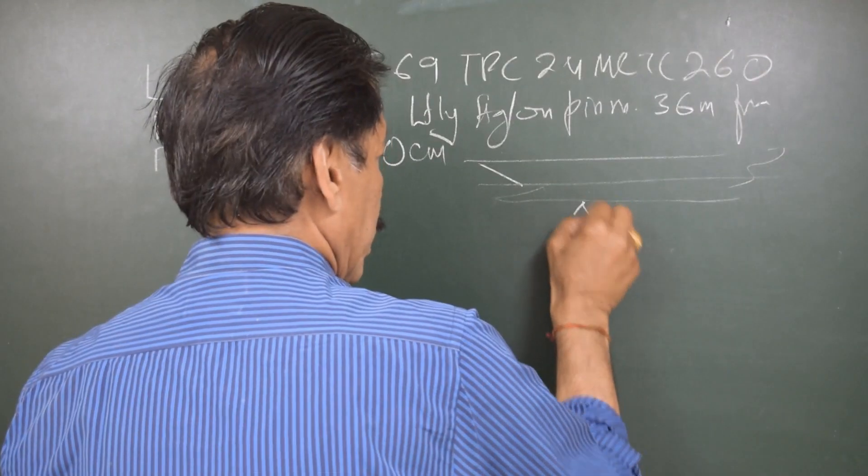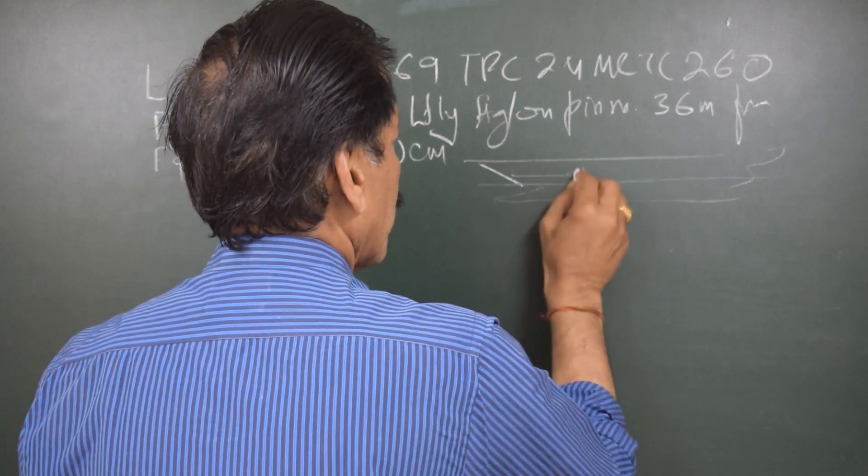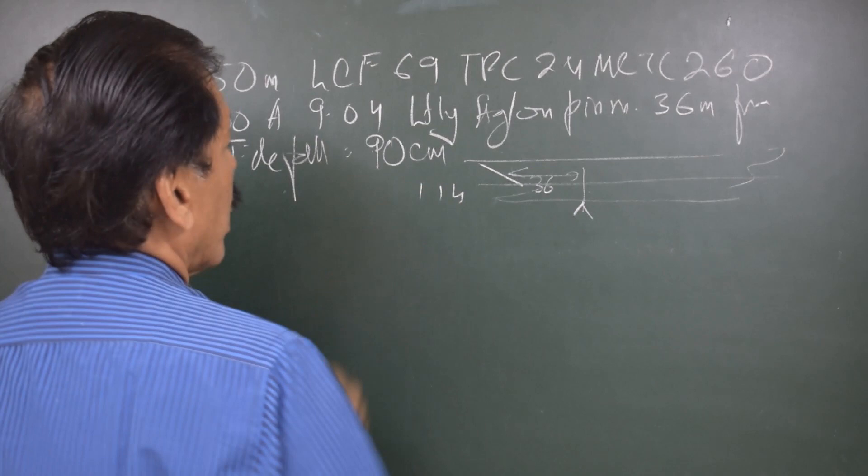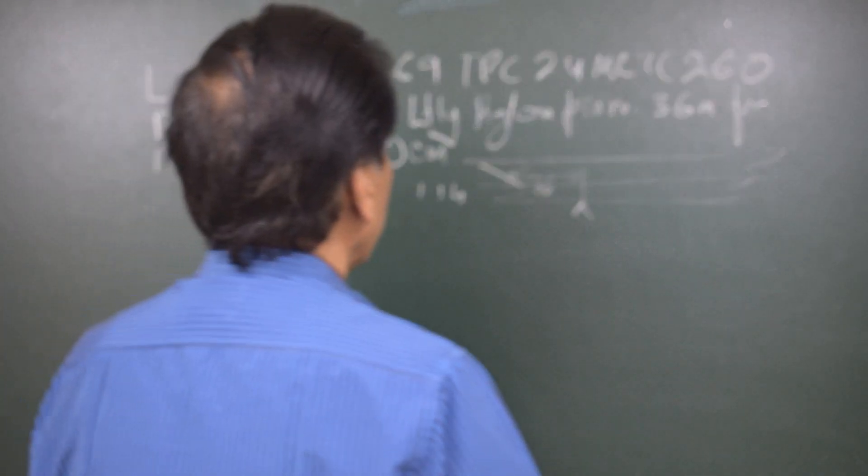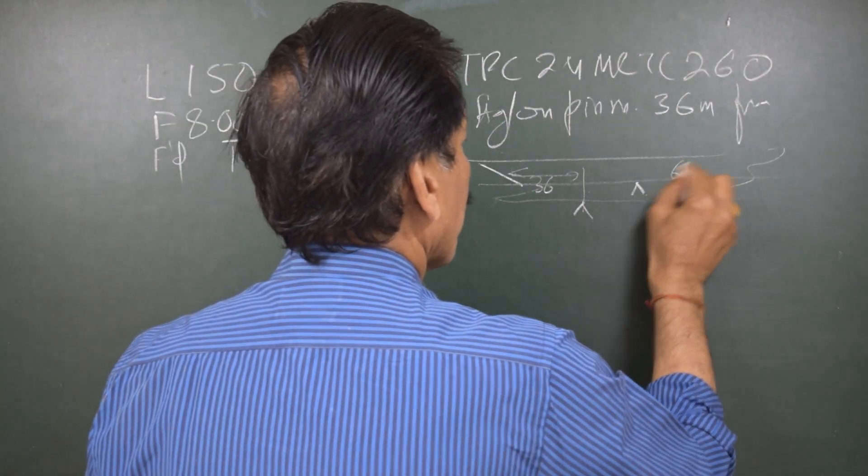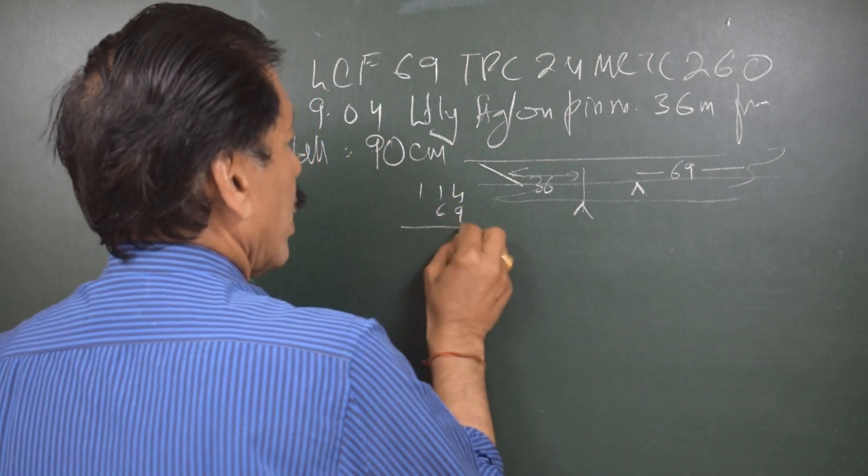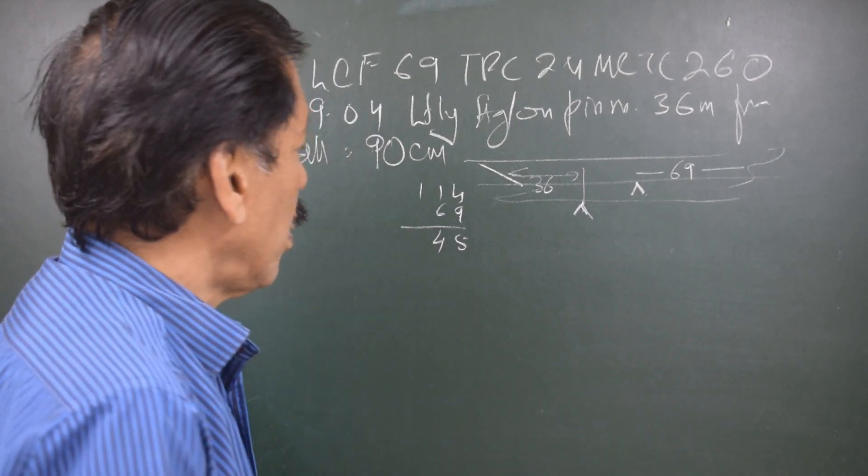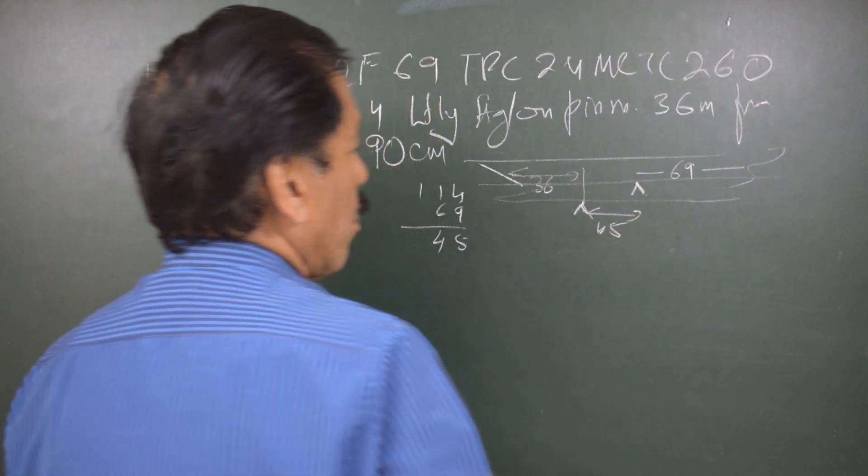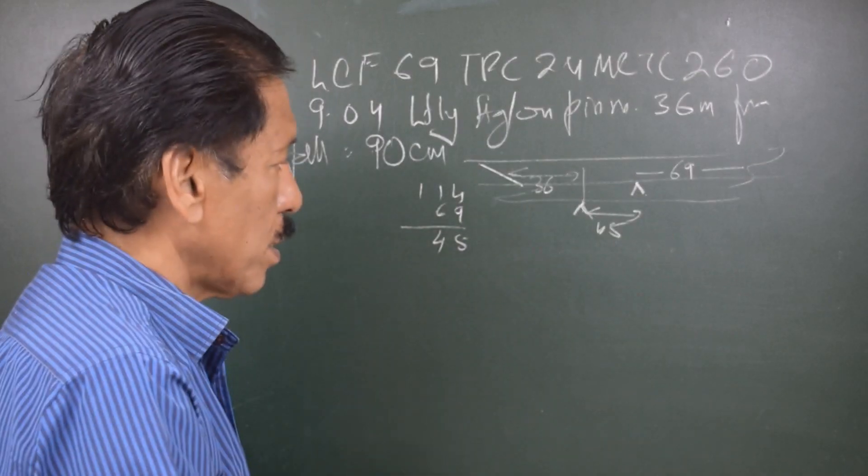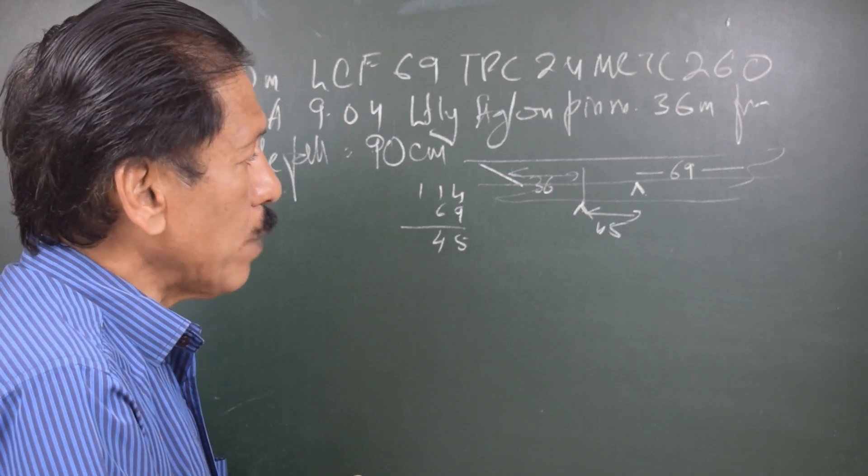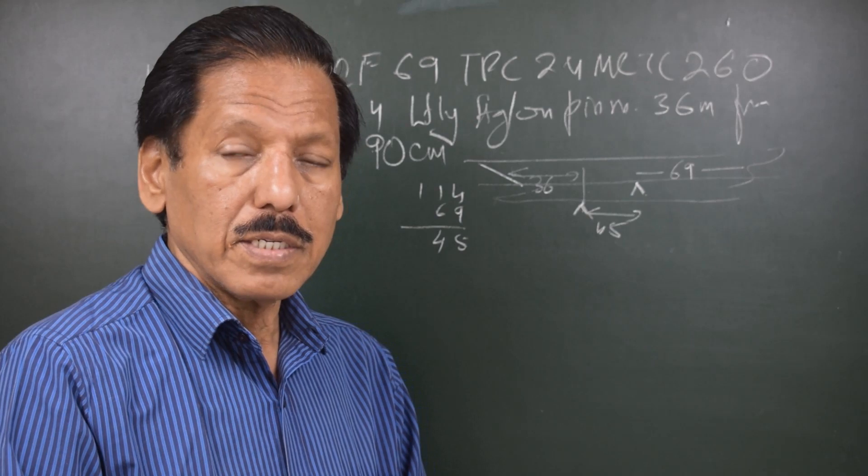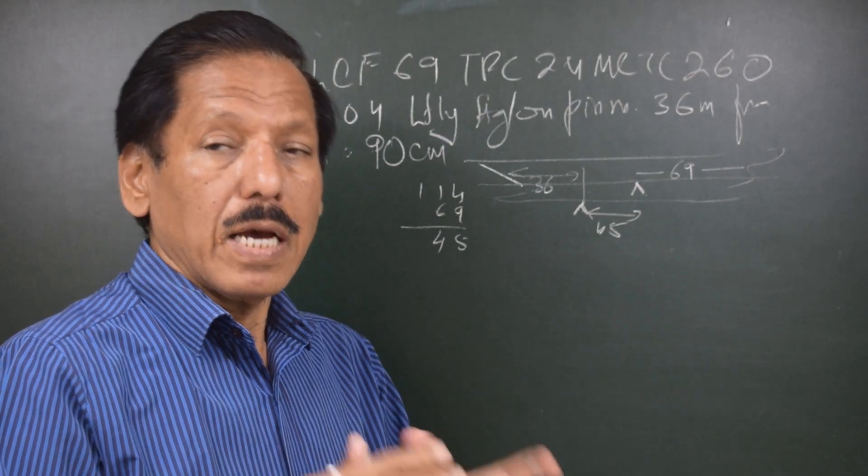Looking at the picture, the situation would be something like this. There is a pinnacle over here, and the distance of pinnacle from forward is 36 meters, total LBP is 150. So 114 meters from the aft perpendicular. But we have center of rotation which is 69 meters from aft, so the distance of the pinnacle from the center of rotation will be 45 meters.